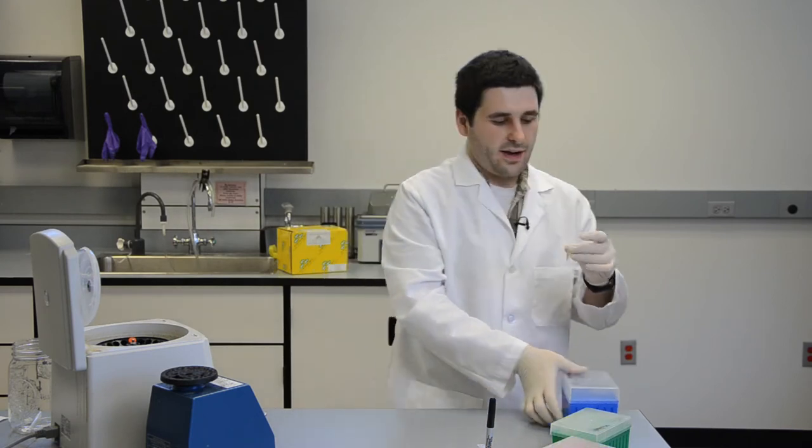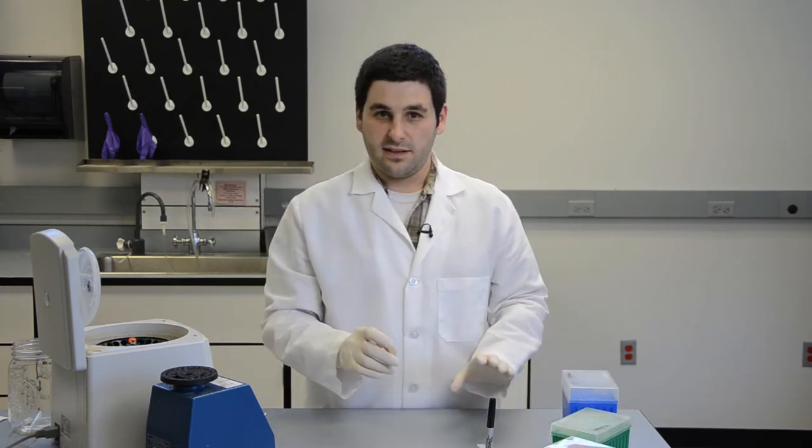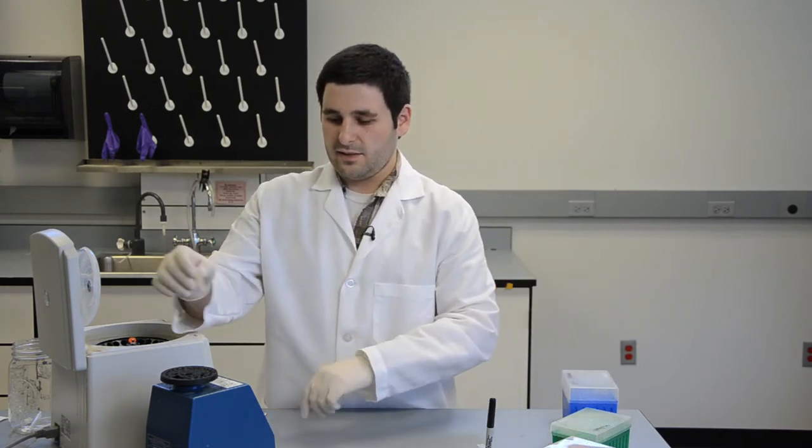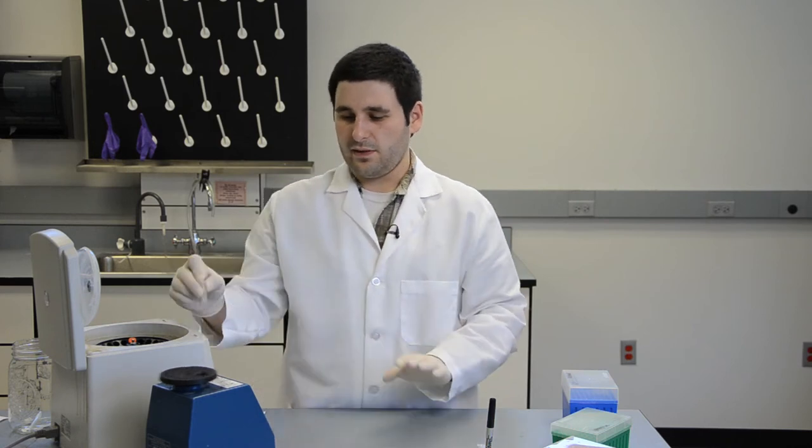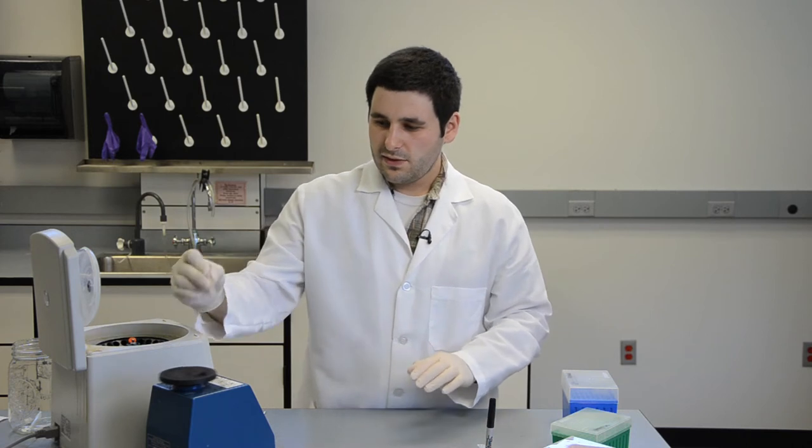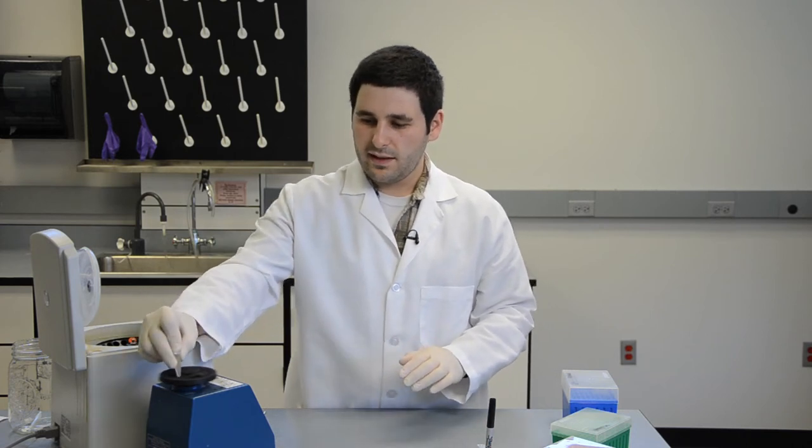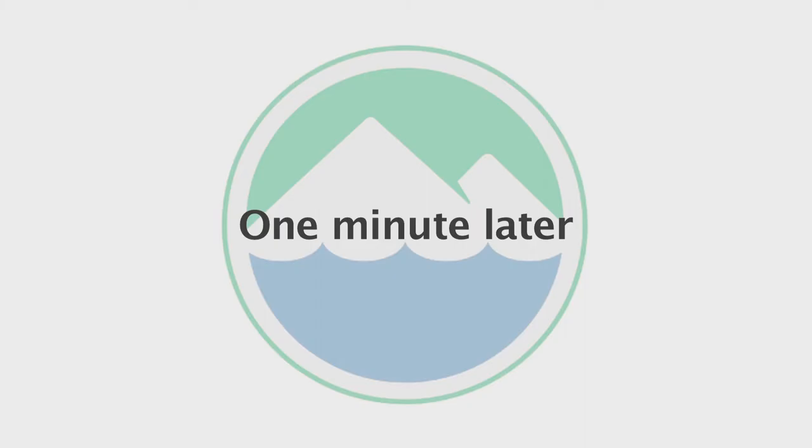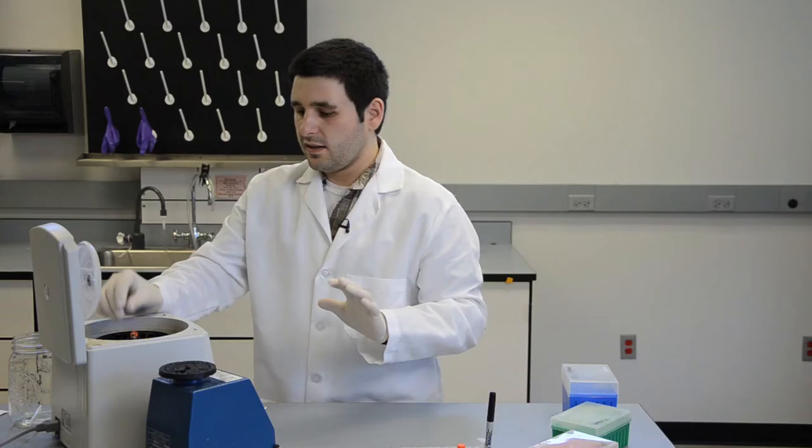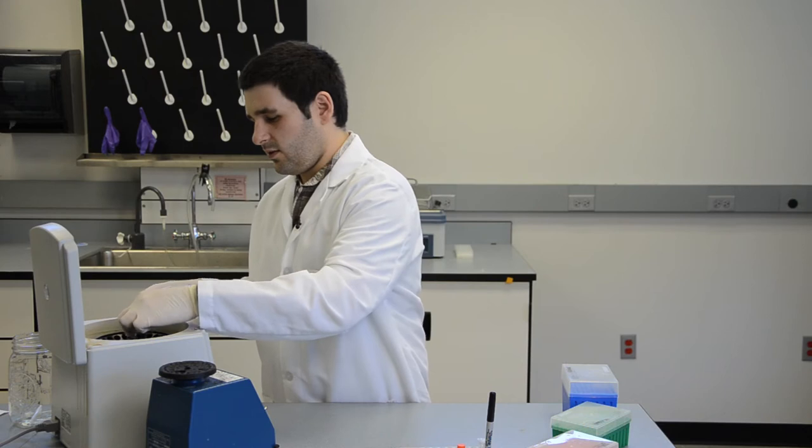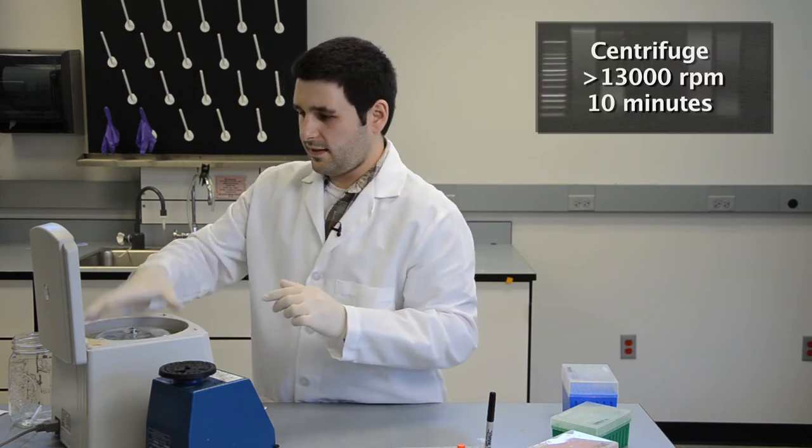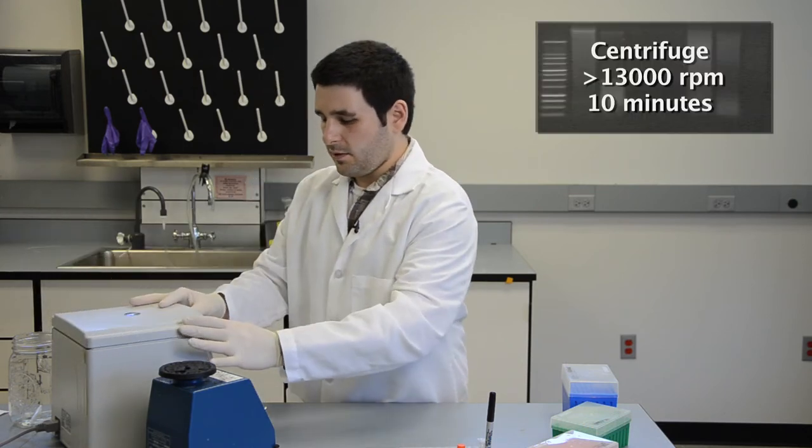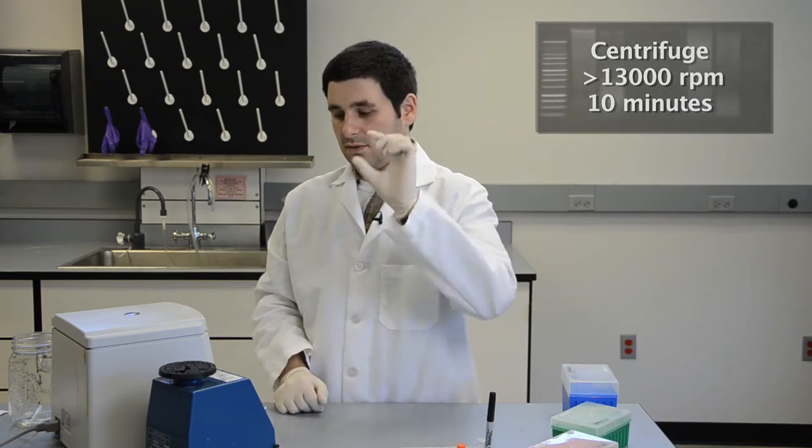After we added the chloroform to the DNA extraction liquid, we want to vortex that at the highest speed for just one minute. When you do that, make sure you keep your hand over the lid so it doesn't accidentally pop off. Now we're going to centrifuge this at 13,000 RPMs for 10 minutes to give you two layers.